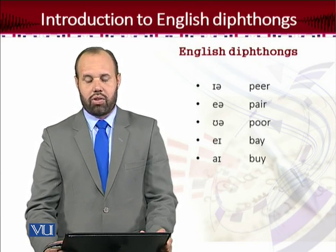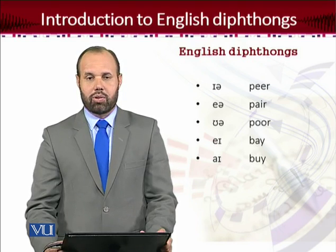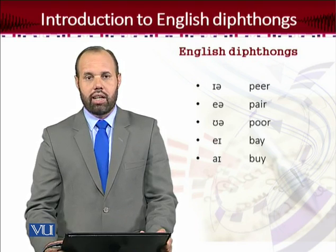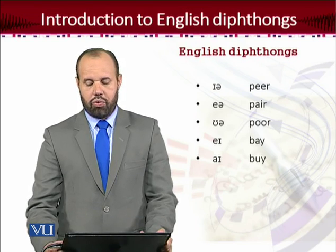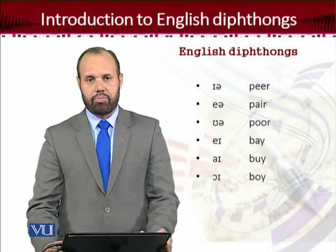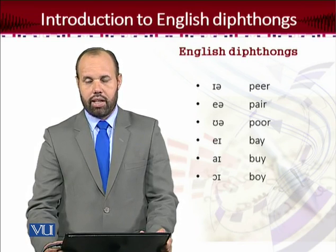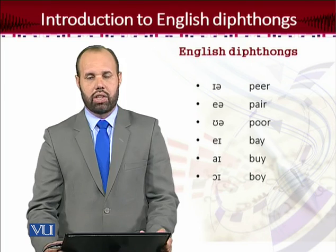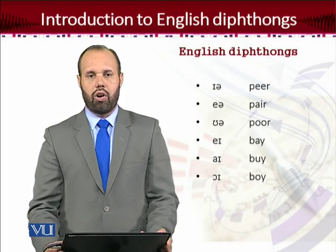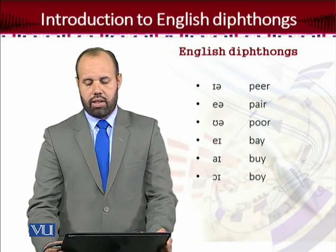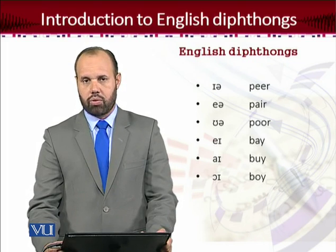Then there is the /aɪ/ sound — like 'by.' The starting sound is /a/ and the ending is the closing /ɪ/ sound. Then there is another closing diphthong which ends with /ɪ/ and the starting is /ɔ/ — the half-rounded /ɔ/ sound — and the ending is /ɪ/, in words like 'boy,' 'toy,' or 'avoid.' This /ɔɪ/ is the third type of diphthong ending with /ɪ/.